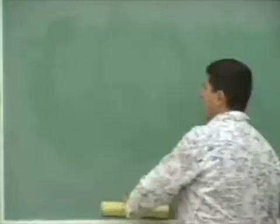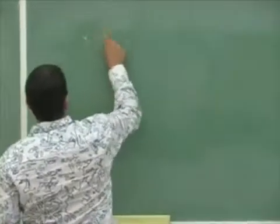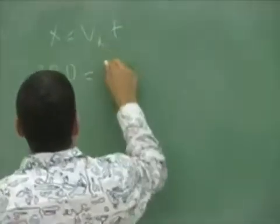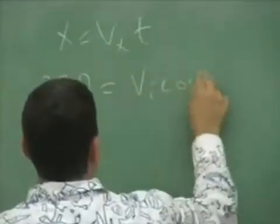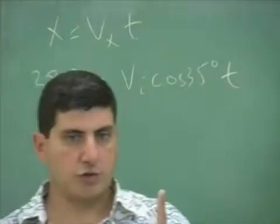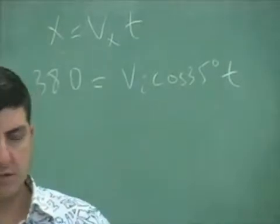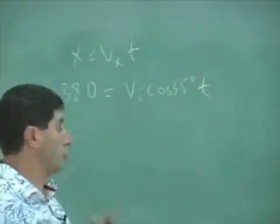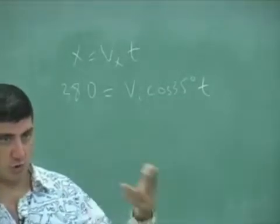So now what we do is we say the X is equal to VX T. The X needs to be 380. The VX is V initial cosine of 35. So you know it needs to travel a horizontal distance of 380, and you know the angle is 35, but you don't know V initial and you don't know T.